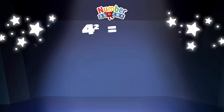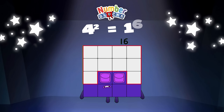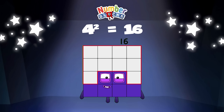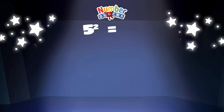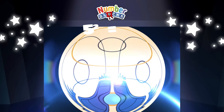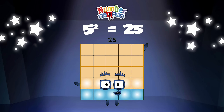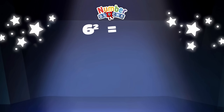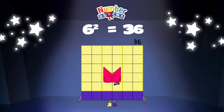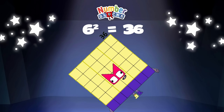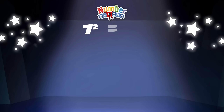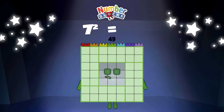Four square is equal to sixteen. Five square is equal to twenty-five. Six square is equal to thirty-six. Seven square is equal to forty-nine.